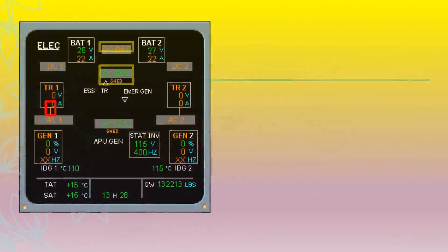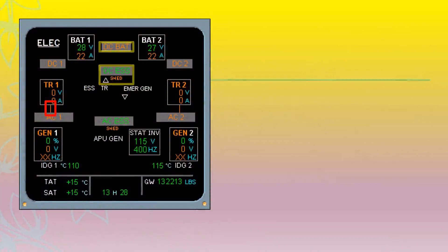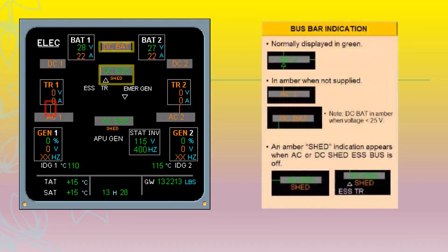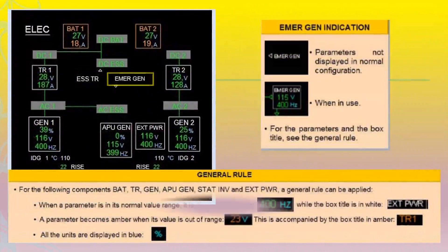Bus bar indication is normally displayed in green, and in amber when not supplied. An amber SHED indication appears when the AC or DC shed essential bus is off. DC battery indication is in amber when voltage is below 25V. Emergency generator indication parameters are not displayed in normal configuration, but are displayed in green when in use.